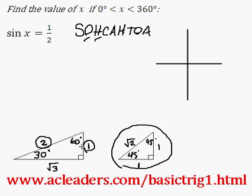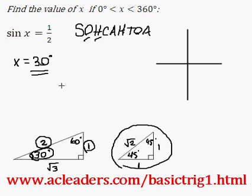In order for this side of the triangle to be the opposite, we need this angle. So the sine of 30 is 1 over 2. So x is 30 degrees. Are we done? We're not done with the question yet — we just found the first value.